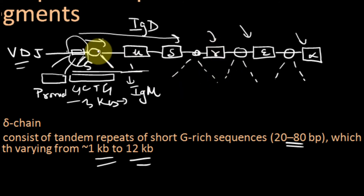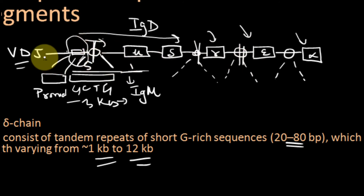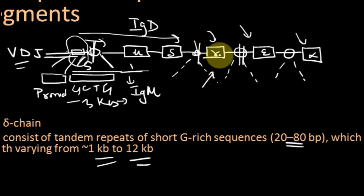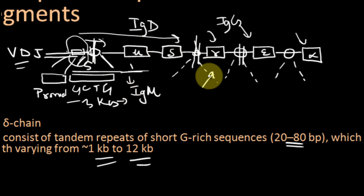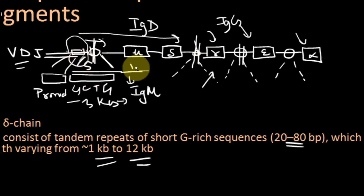Switched on means that transcription of that particular class of antibody will then occur. This happens through a double-stranded break produced at the S region — that is the importance of this S region. A double-stranded break will be produced at this S region, and also at the specific region just upstream of whichever class of antibody needs to be switched on. For example, if IgG needs to be prepared, breaks occur at that switch region.